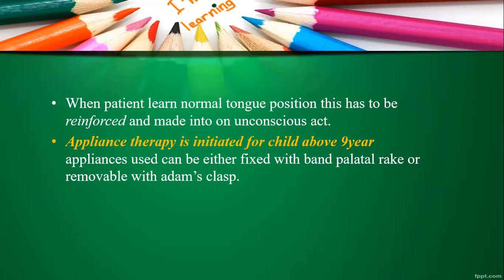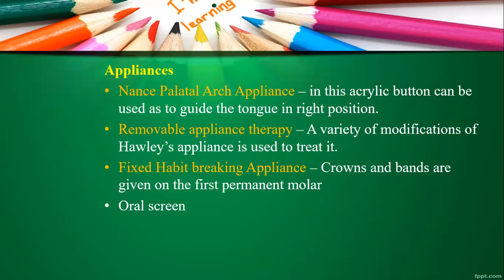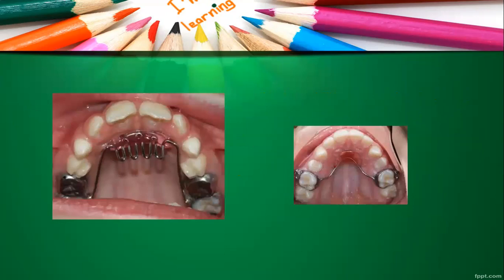If exercises don't work, appliance therapy is initiated — basically for children above the age of nine. Appliances used can be fixed (such as a band palatal rake) or removable. There are various habit-breaking appliances based on patient compliance — for example, NANCE palatal arch appliances, fixed habit-breaking appliances, and Bluegrass appliances. A fixed rake appliance with acrylic embedded and the NANCE palatal arch appliance both help to position the tongue correctly.